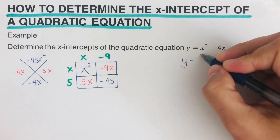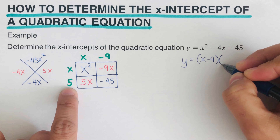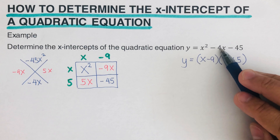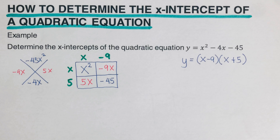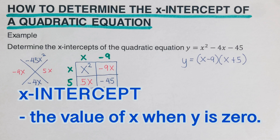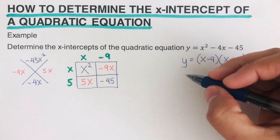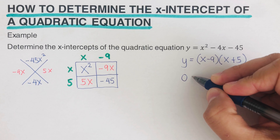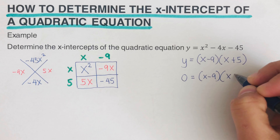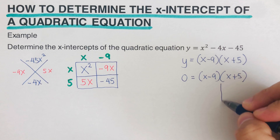We can now rewrite the equation in factored form: y equals (x minus 9)(x plus 5). These two expressions are equivalent. Since an x-intercept is the value of x when y is zero, we set the equation equal to zero: (x minus 9)(x plus 5) = 0, and then use the zero product property to solve for x.